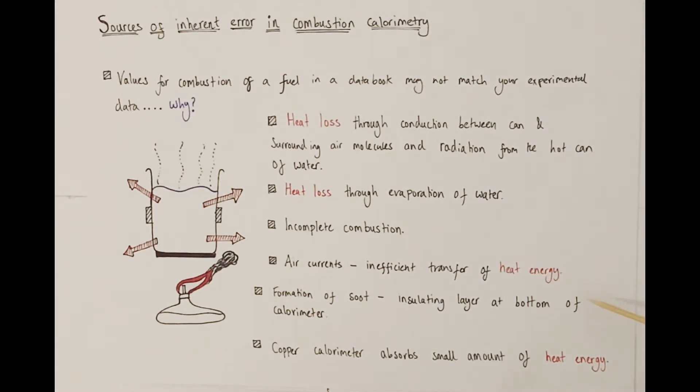If there is incomplete combustion taking place, you're likely to form some soot on the base of your copper calorimeter. The soot is essentially uncombusted carbon and it will insulate the bottom of the can from the flame and therefore reduce the heat transfer from the burning flame to the water itself. Again, a source of error.